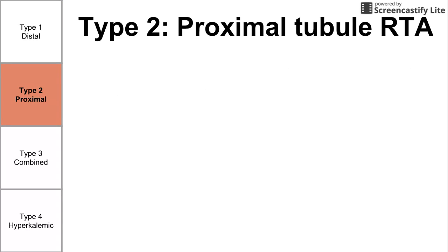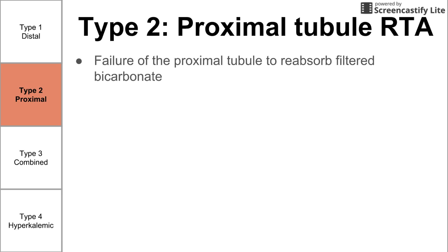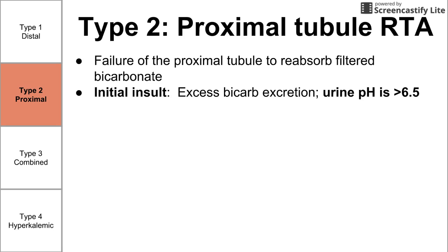Type 2 is called proximal tubular RTA. It's caused by the failure of the proximal tubule to reabsorb filtered bicarbonate. Right after the glomerulus filters plasma, much of that material goes back into the bloodstream through the proximal tubule. When the proximal tubule fails to reabsorb bicarbonate specifically, it is a proximal tubular RTA. Initially there is excess bicarbonate excretion, and right after bicarbonate can no longer be reabsorbed, the urine pH is very high because bicarbonate, the conjugate base, increases the urine pH.